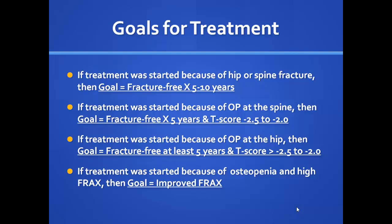Treatment goals vary by situation. If treatment started after a hip or spine fracture, the goal is to remain fracture-free for five to ten years. If started for osteoporosis at the spine, the goal is fracture-free for five years and to bring the T-score back into the osteopenia range. For hip osteoporosis, the goal is fracture-free for at least five years and improved T-score. For osteopenia with high fracture risk, the goal is improved fracture risk profile.